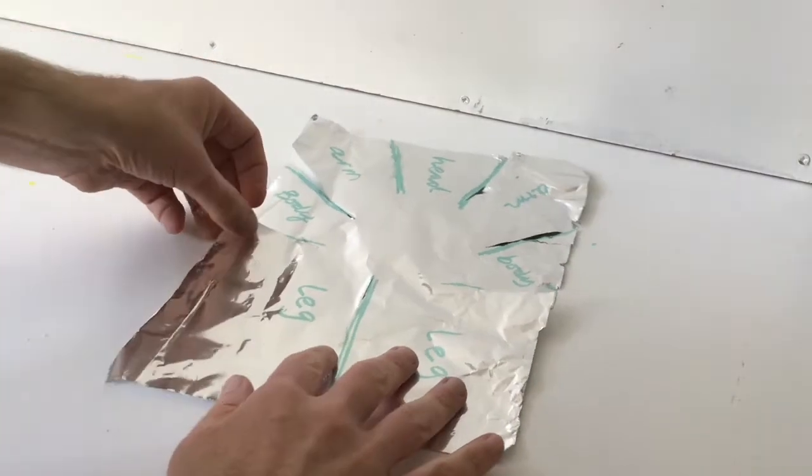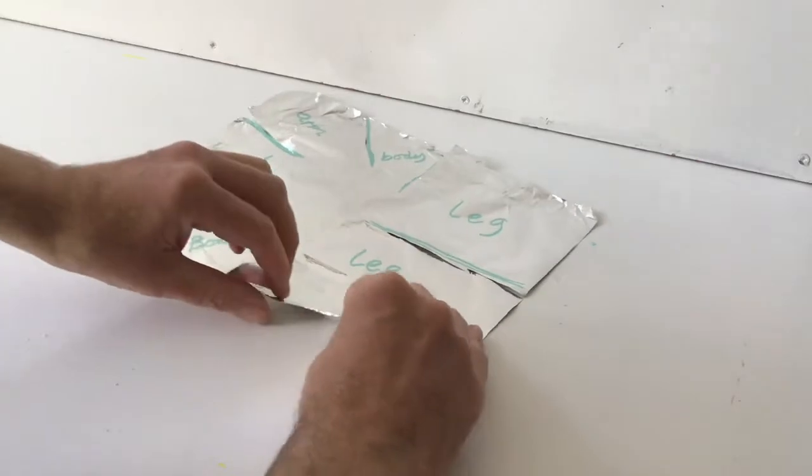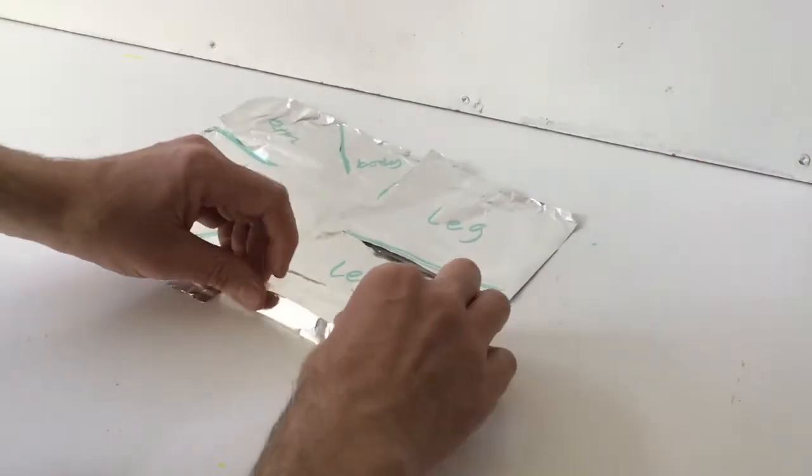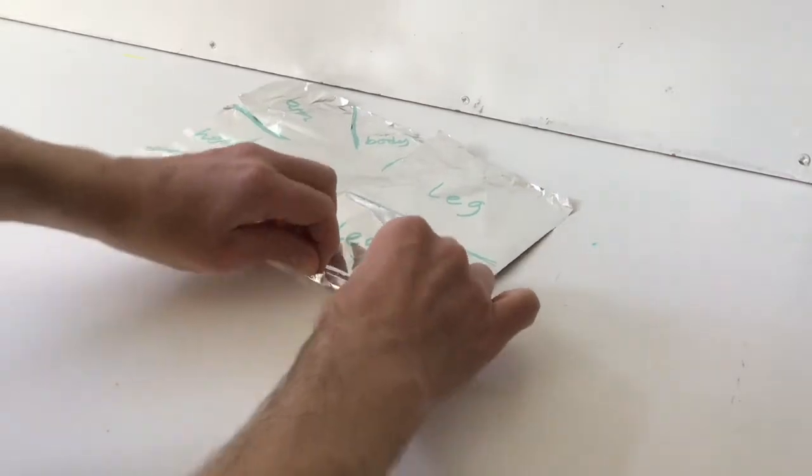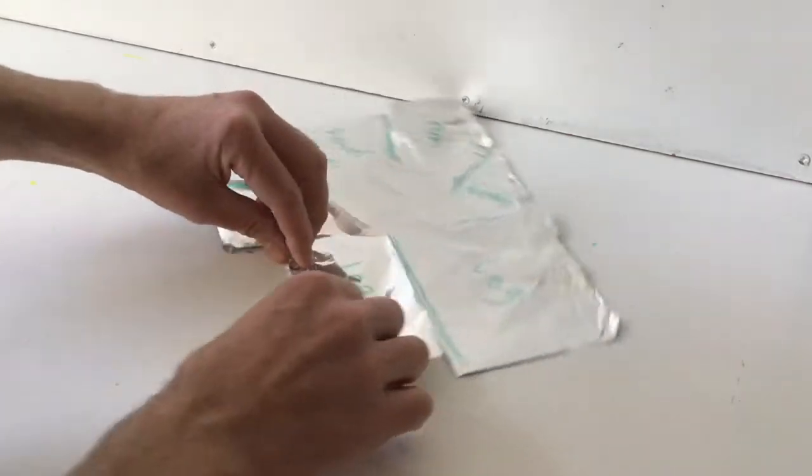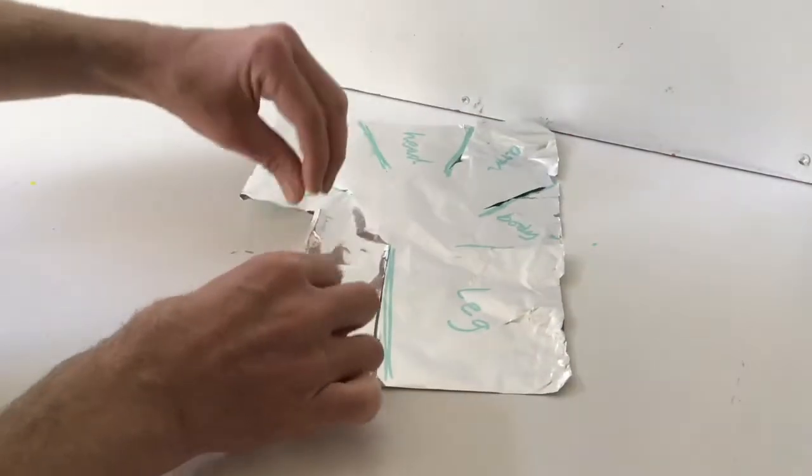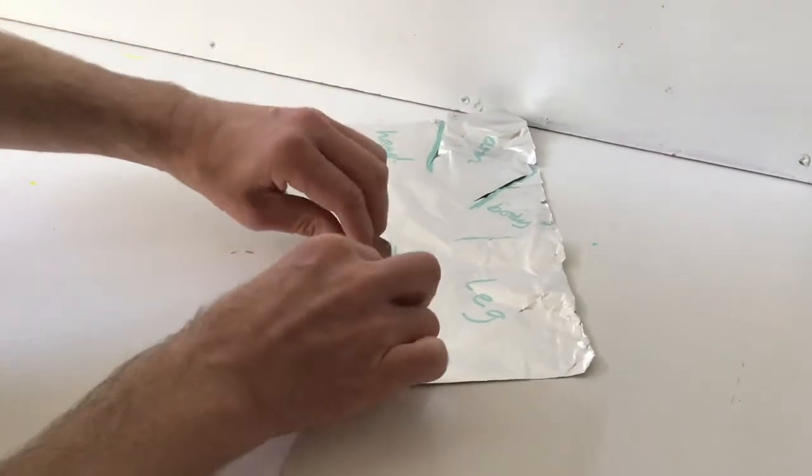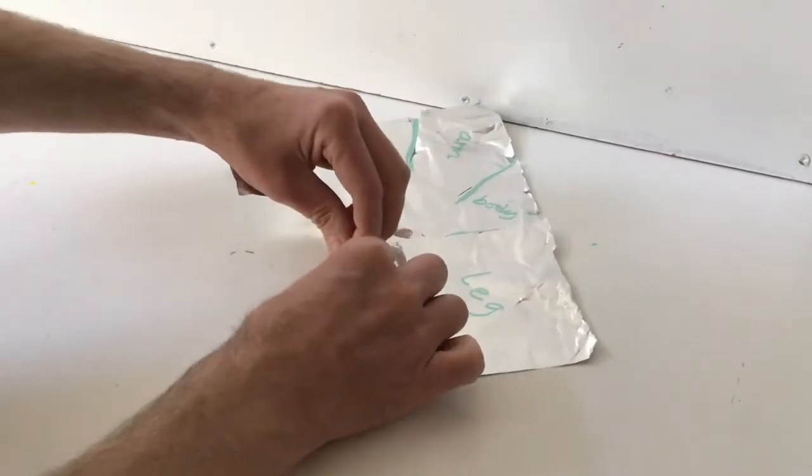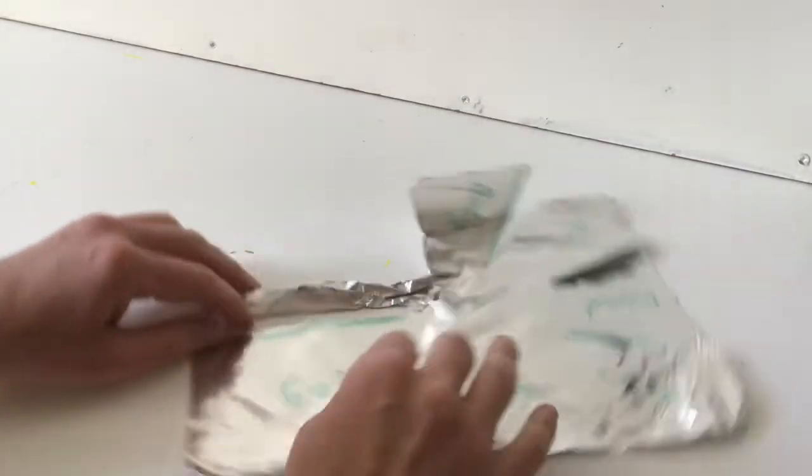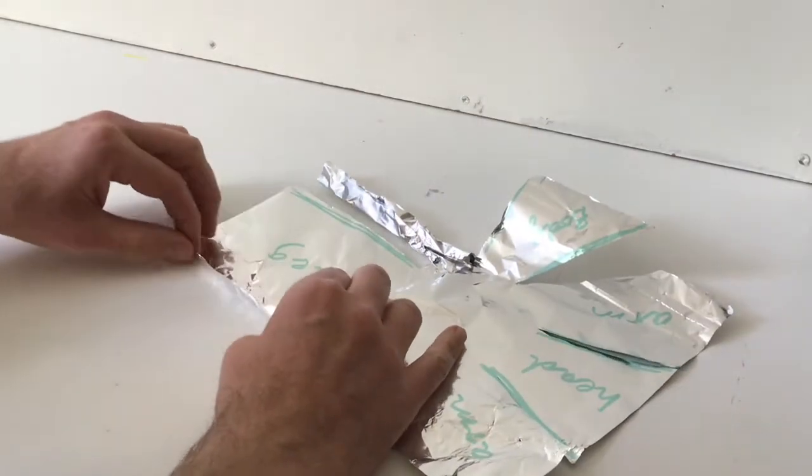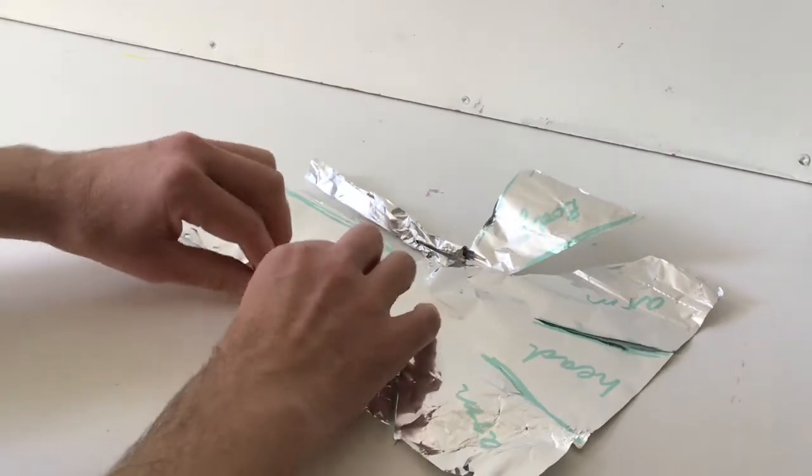So to get started we're not going to make the folds too tight to start with, we're just going to do them quite loose and then we'll tighten them all up later. So I'm just going to start folding in the legs, I'm just going to fold it over a bit, try not to scrunch it too much at the moment, just sort of rolling it over really in towards the middle. And do the second leg the same way.